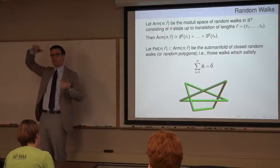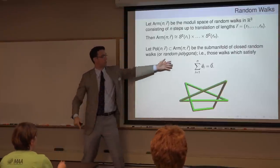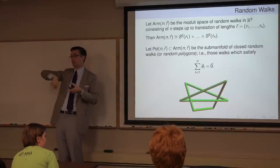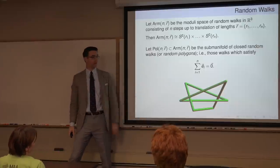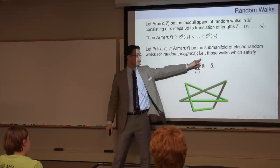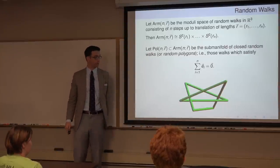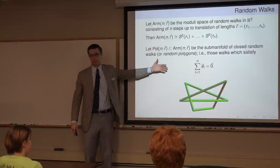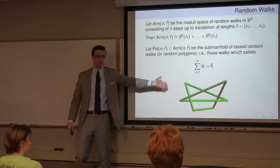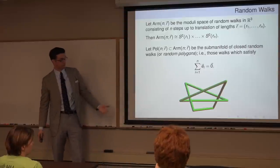Slightly harder is imposing the condition that you return to the starting point. Saying the walk closes means the vector sum of the edges equals zero. This is a codimension-three condition — it's a vector equation with three coordinates, so three numbers must equal zero. This means you can't do rejection sampling to get closed polygons, because it's genuinely measure zero — positive codimension. Here's an example of a six-step random walk that forms a closed curve.